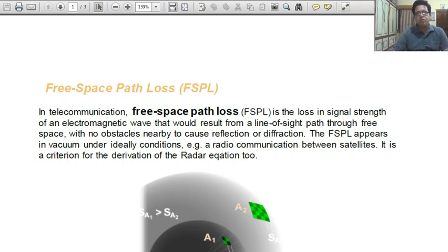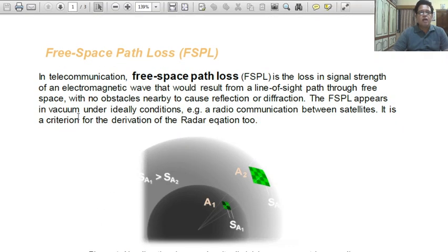When microwaves transmit through free space, then how losses are there? In telecommunication, Free Space Path Loss is the loss in signal strength of electromagnetic wave that would result from a line of sight path through free space, with no obstacles nearby cause reflection or diffraction. The FSPL appears in vacuum under ideally conditions, that is radio communication between satellites. It is a criteria for the derivation of the radar equation too.